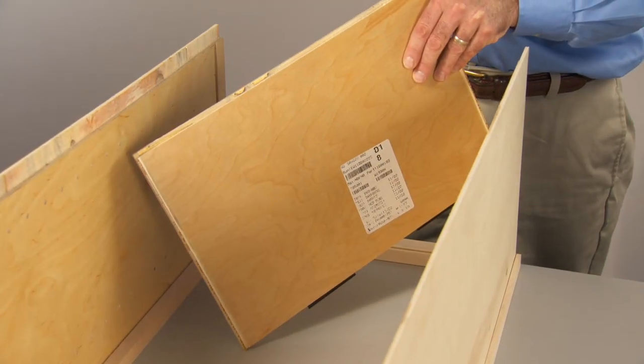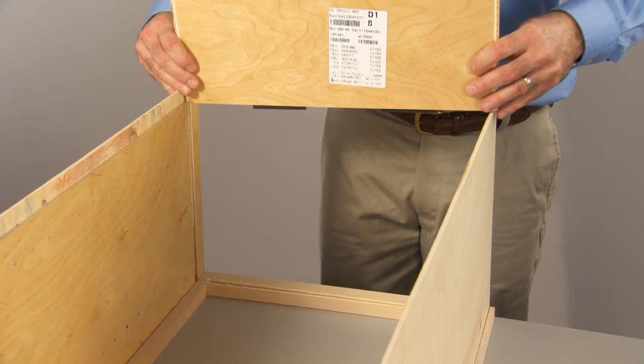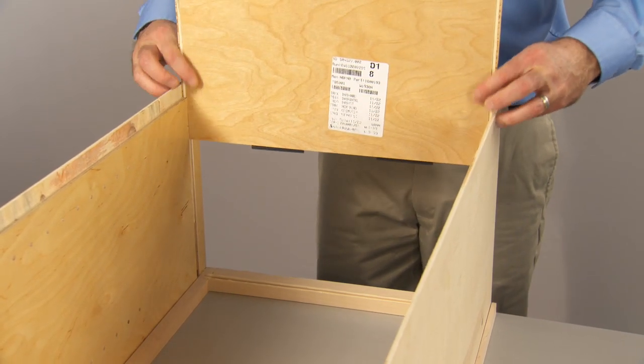The rabbet should be facing towards the inside of the cabinet, and the splines should be facing down. Now slide the bottom into the dovetails.